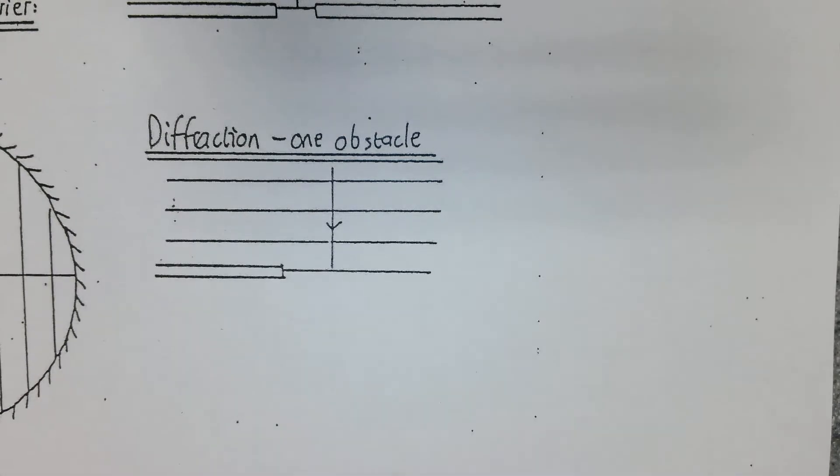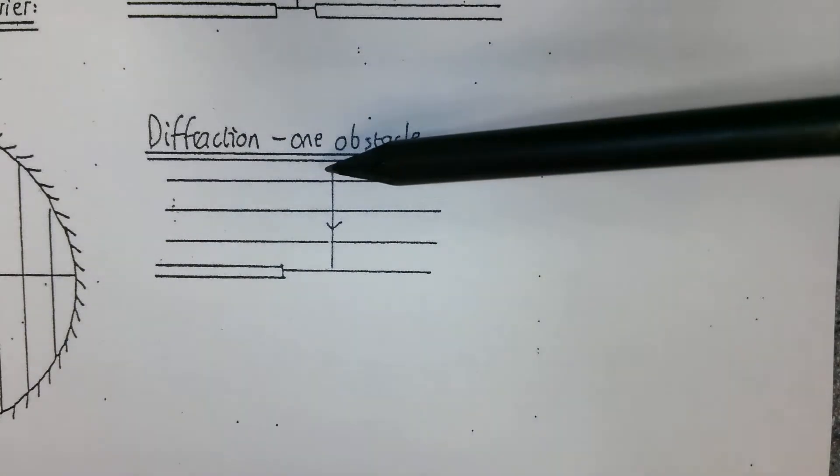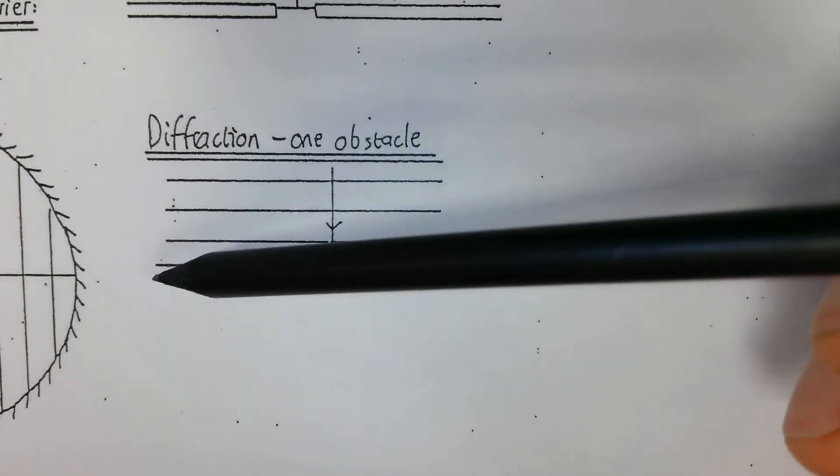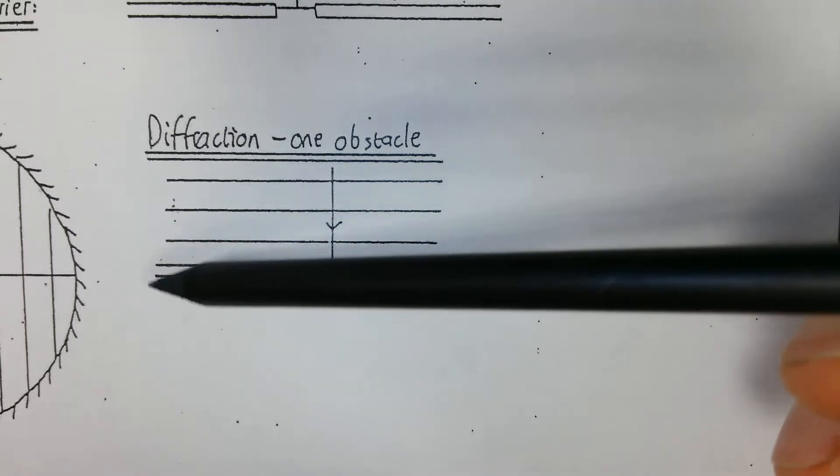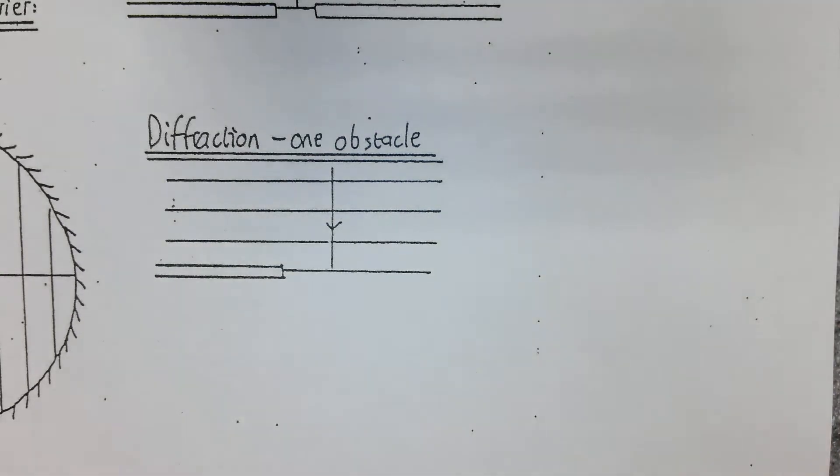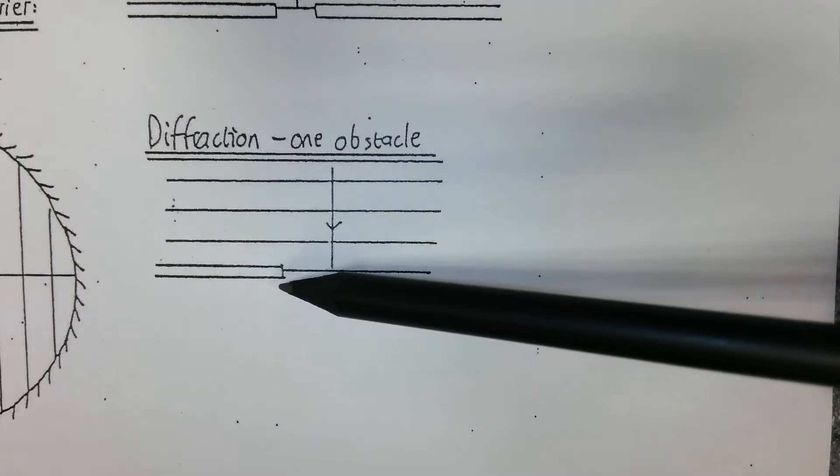Next we're going to look at diffraction past one obstacle. What you can see here is a plane wave coming in and there's just an obstacle here creating an edge. There's nothing on this side. You will get a small level of diffraction as you come past it.